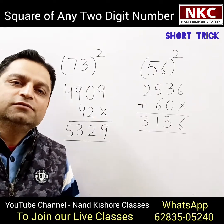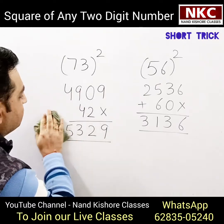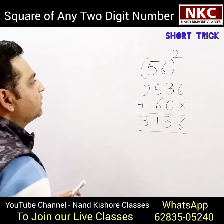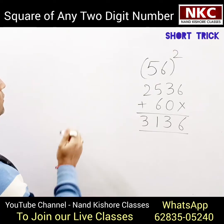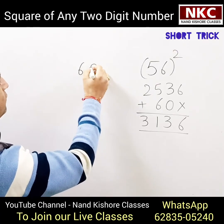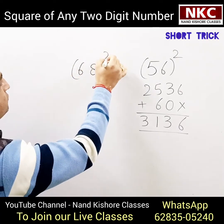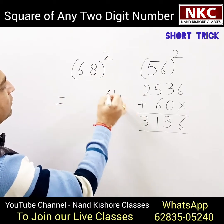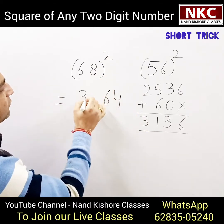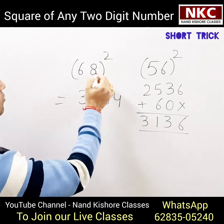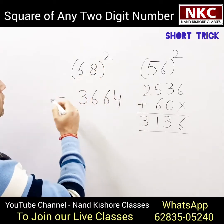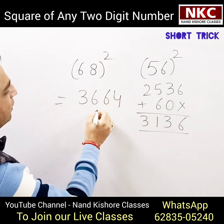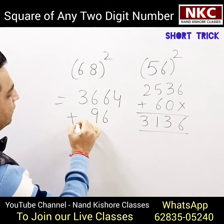Let's do one more for practice — 68 square. 8 square is 64, 6 square is 36. Now multiply: 8 times 6 is 48, 48 times 2 is 96. Just add them — the answer is 4624. This is very easy.